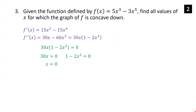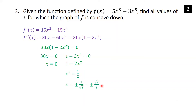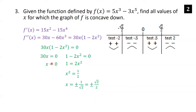From 30x equals 0, dividing by 30 gives x equals 0. From 1 minus 2x squared equals 0, adding 2x squared and dividing by 2 gives x squared equals one half, so x equals plus or minus 1 over root 2. Rationalizing the denominator, this equals plus or minus root 2 over 2.